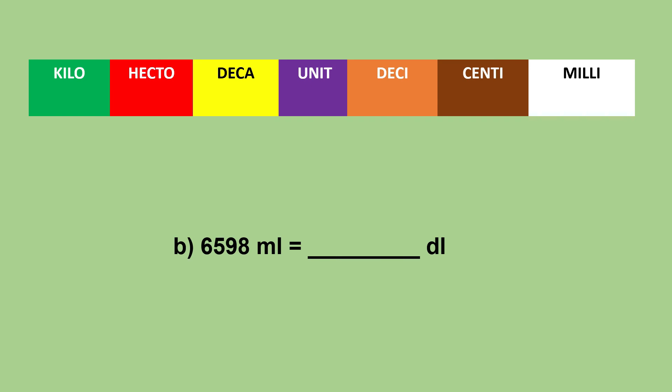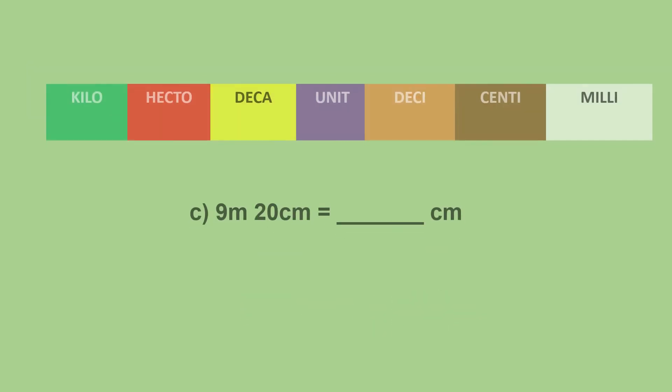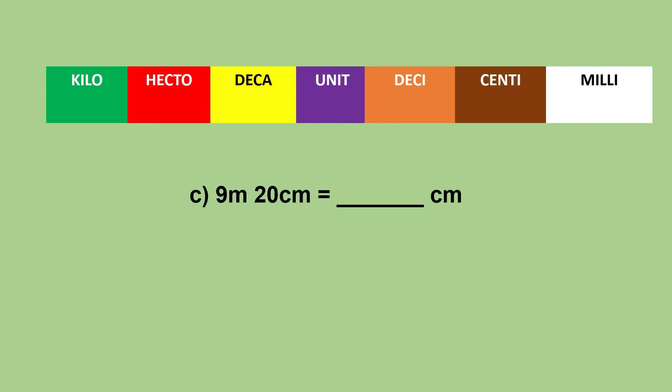The second activity: 6598 milliliters to deciliters. Here, to move from milliliter to deciliter, we move two steps from right to left, so we will divide by 100. Thus, we get 65.98 deciliters.